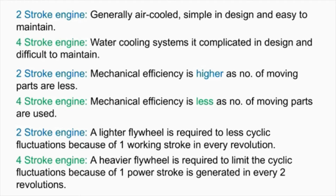In a two-stroke engine, mechanical efficiency is higher as the number of moving parts is less. In a four-stroke engine, mechanical efficiency is lower as more moving parts are used. In a two-stroke engine, a lighter flywheel is required due to fewer cyclic fluctuations, as there is one working stroke per revolution. In a four-stroke engine, a heavier flywheel is required because only one power stroke is generated every two revolutions.